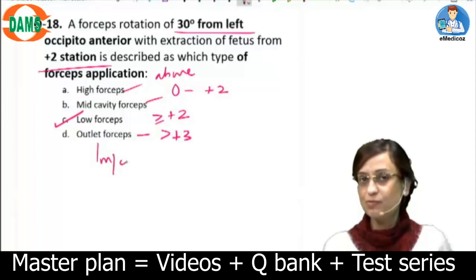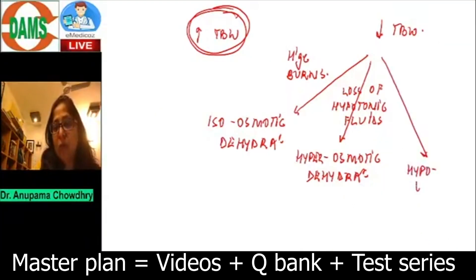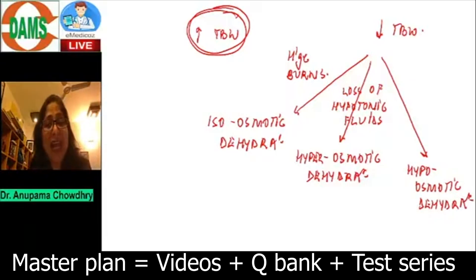Hypo-osmotic dehydration - this means that total body water has reduced but there is decreased osmolality. That means it is a loss of hypertonic fluids.